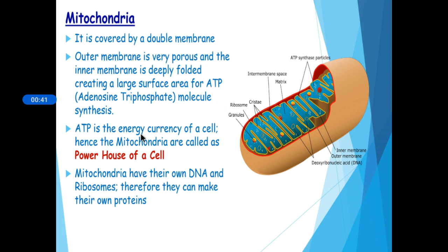ATP is known as the energy currency of a cell. Regarding structure, mitochondria have two membrane coverings instead of one: the outer membrane, which is porous, and the inner membrane, which is deeply folded. These folds create a large surface area for ATP-generating chemical reactions to take place.